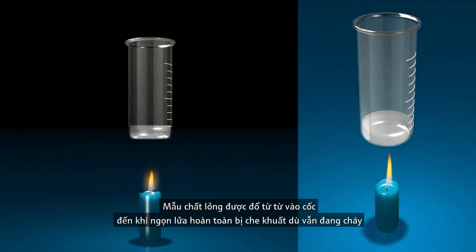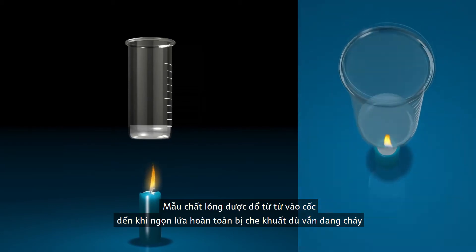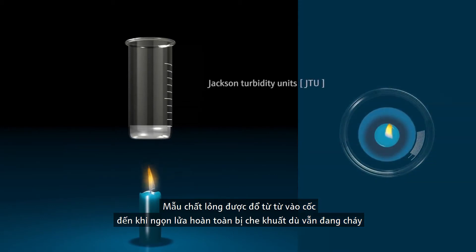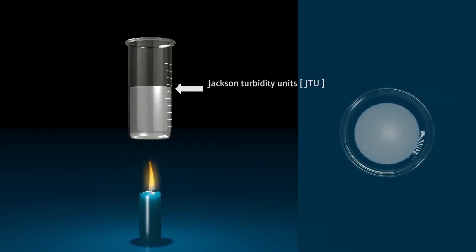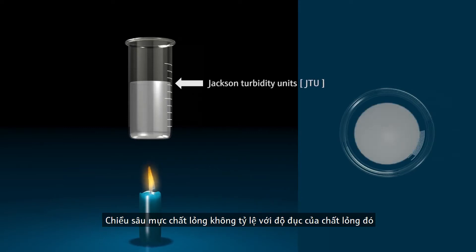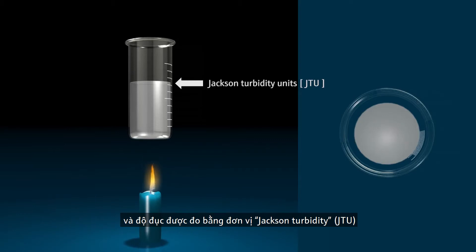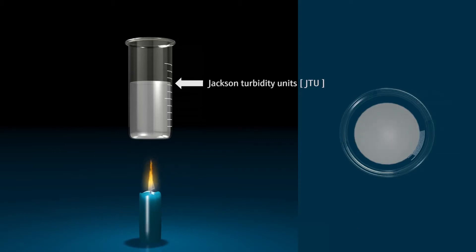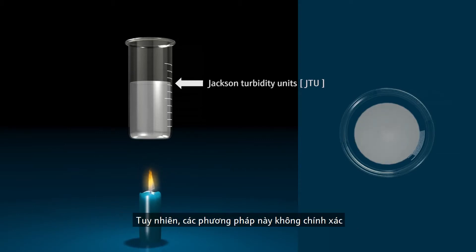A sample is slowly poured into the vessel until the candle flame is completely obscured and changes into an even shine. The sample depth is then related to the silica scale, and the turbidity is measured in Jackson Turbidity Units. These methods are however not precise and depend on the subjective impression of the testing person.